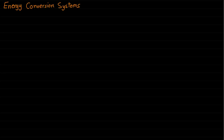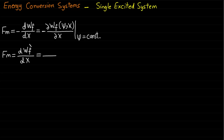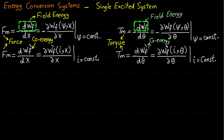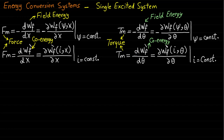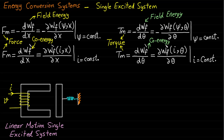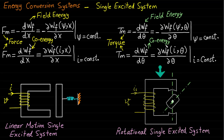Welcome back to the Energy Conversion Lectures. In the previous lecture, we derived expressions for the mechanical force and torque based on the change of field energy DWF and the change of co-energy DWF dash for the single excited electromechanical energy conversion systems. In this lecture and the coming lecture, we will learn how to use and apply these equations to the linear motion and rotational motion single excited systems to develop force and torque expressions.